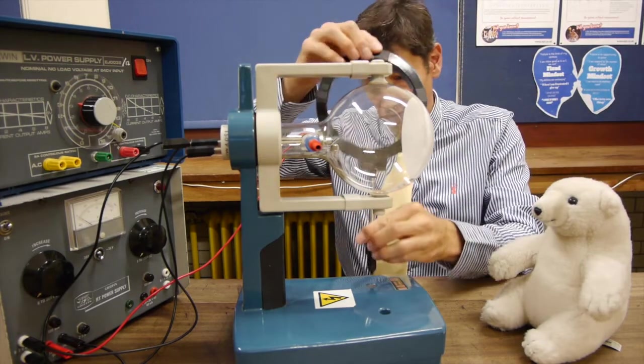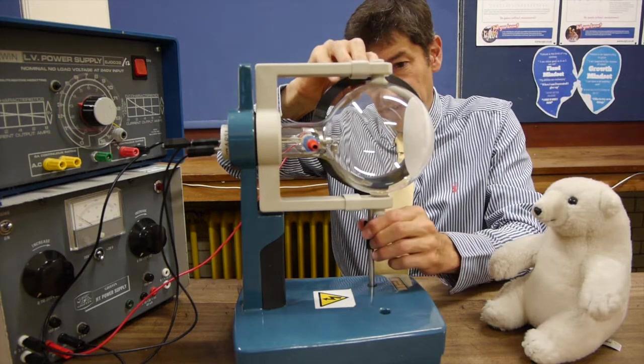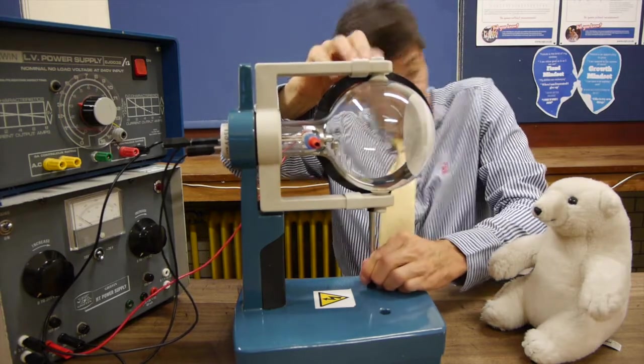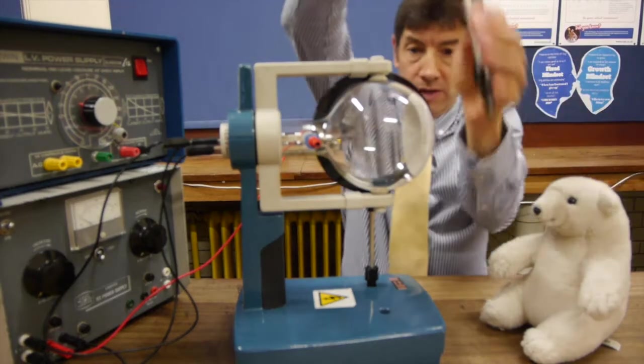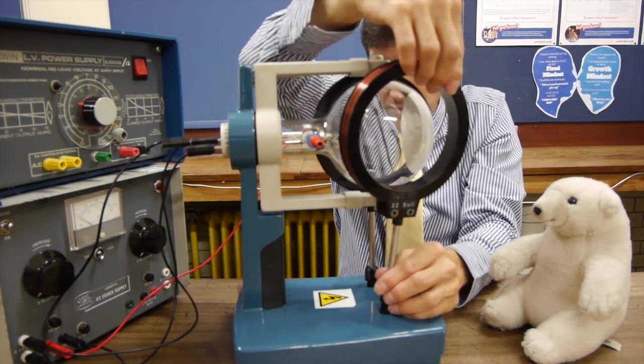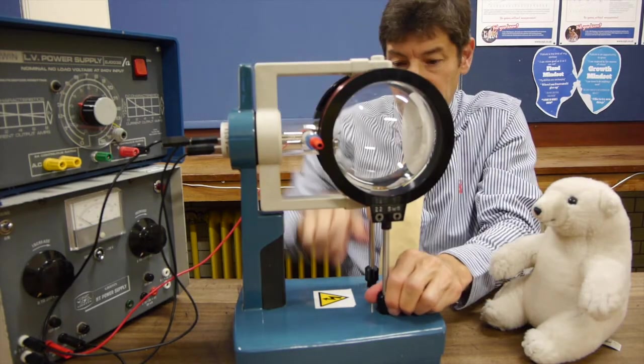So to do that, we're going to use some Helmholtz coils. And these have the advantage of giving a fairly uniform field if we wire them up properly. So there's one coil and here's the other. And also you can see through them so you can see the beam quite nicely.